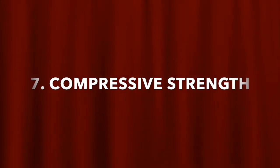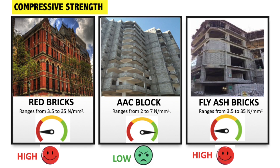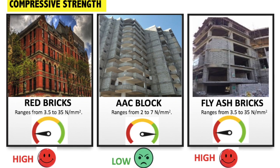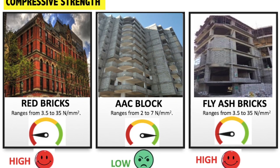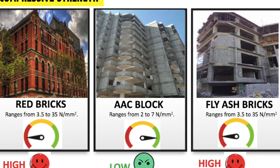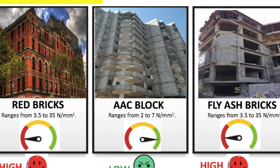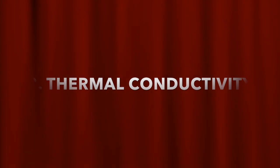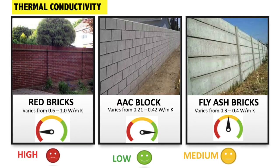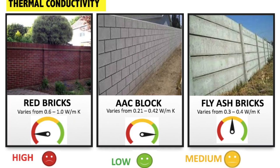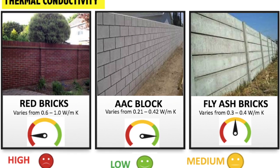Point 7: Compressive Strength. The compressive strength for red bricks ranges from 3.5 to 35 N per square meter, which varies according to class. Point 8: Thermal Conductivity. The thermal conductivity of red brick is high. The thermal conductivity of AAC block is lower than red bricks and there is less heat transfer from the AAC block.